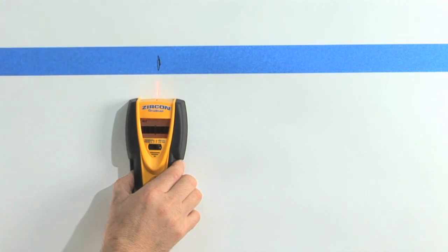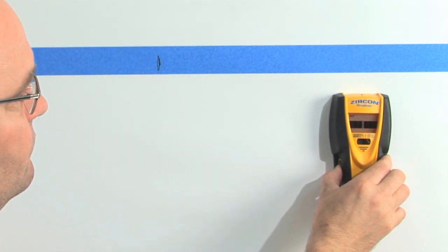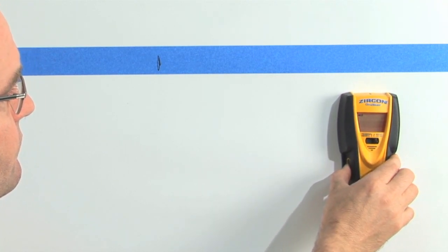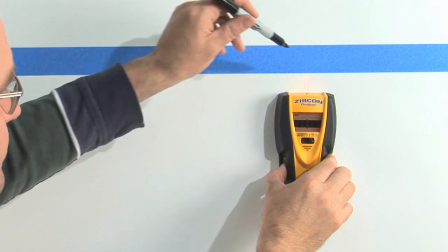As you approach a wire, the bars on the display will come together. Mark where you first get the strongest reading. Keep going until the bars drop off. Reverse direction and mark where the tool shows the strongest reading again.